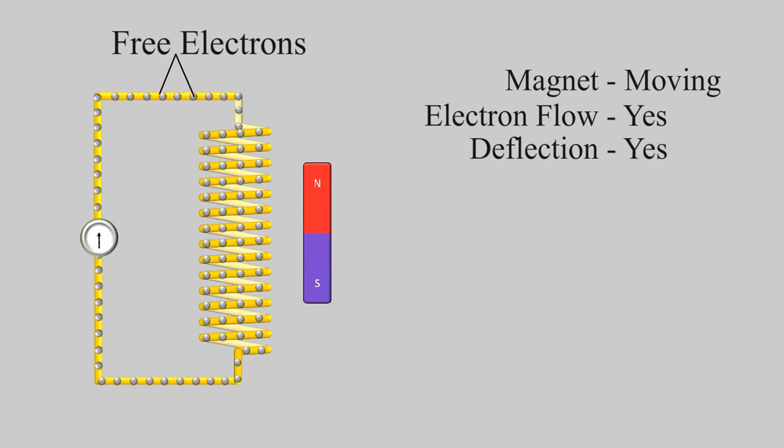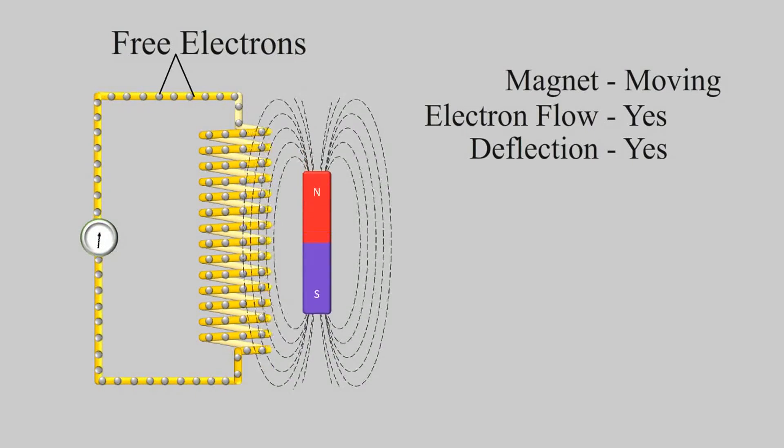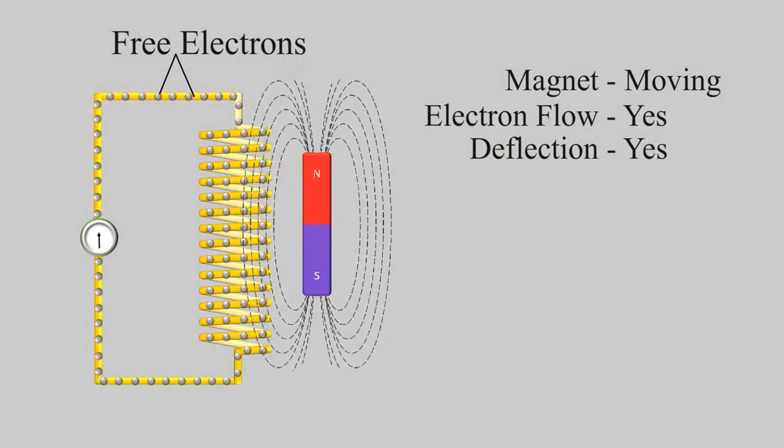Free electrons in a conductor get attracted to the magnetic field. If the magnet is stationary then the electrons remain in same position after attraction. But as you move the magnet side by side the electrons try to follow the magnet and move in one direction.